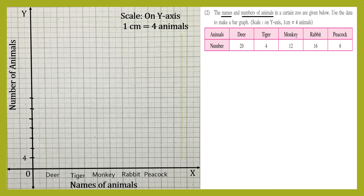The scale is one centimeter equals four animals. So at two centimeters we have eight, at three centimeters four threes are 12, next four fours are 16, then four fives are 20, four sixes are 24, and four sevens are 28.